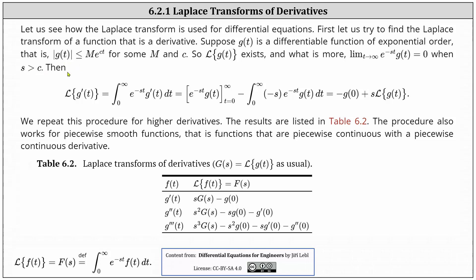Now let's find the Laplace transform of g prime of t. We begin by applying the definition of the Laplace transform, which gives us the integral from zero to infinity of e to the power of negative st times g prime of t dt. To integrate, we need to perform integration by parts, which is in the next step, and the final result is shown on the right.